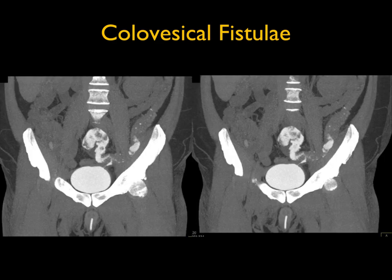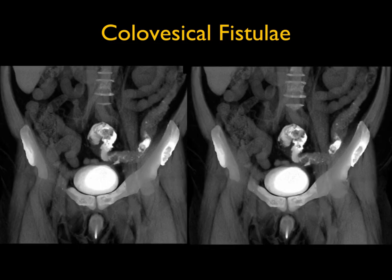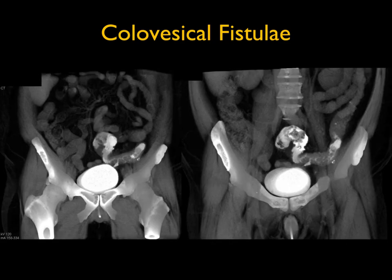A nice example shows the fistula tract from the patient's sigmoid colon to the bladder. These patients will need surgery, and even in the best of hands this has high morbidity and mortality. Colovesical fistula due to diverticular disease: fistulas on the right side are typically due to Crohn's disease, left side to diverticular disease.